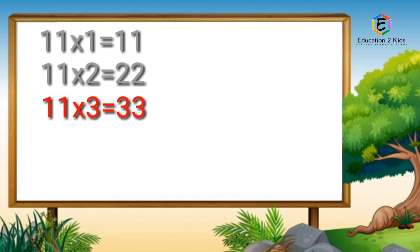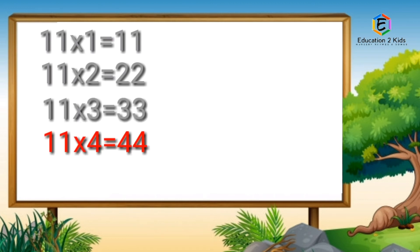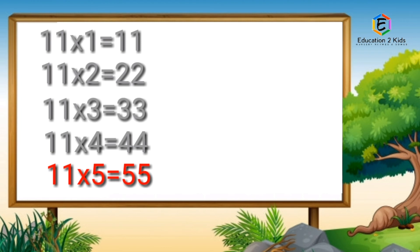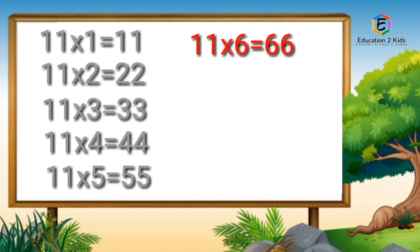Eleven threes are thirty-three. Eleven fours are forty-four. Eleven fives are fifty-five. Eleven sixes are sixty-six.